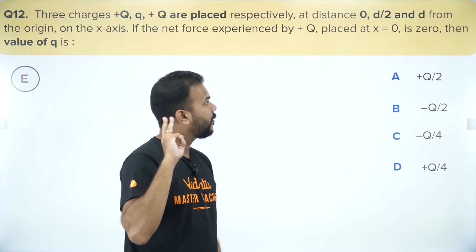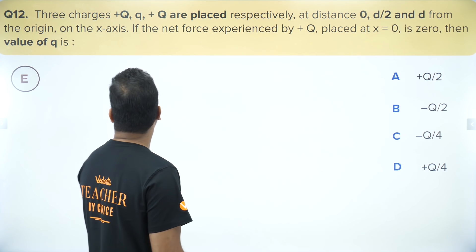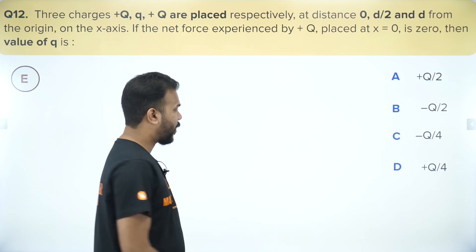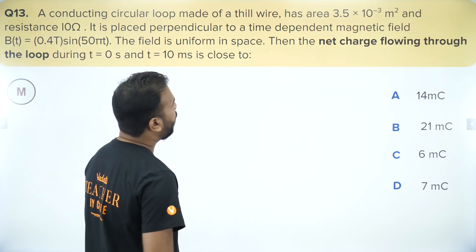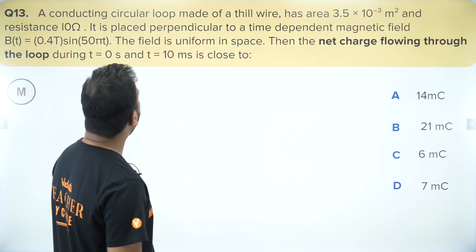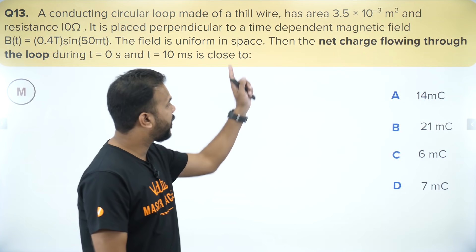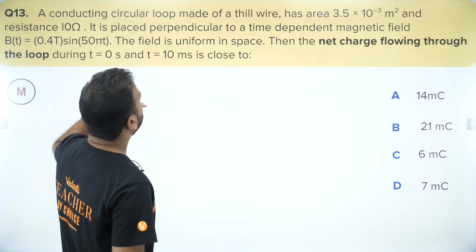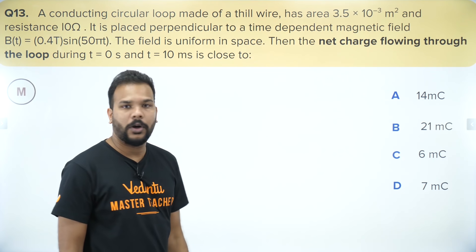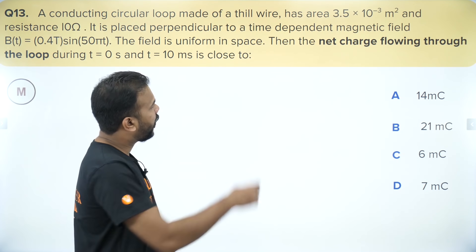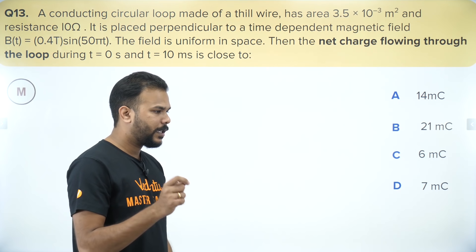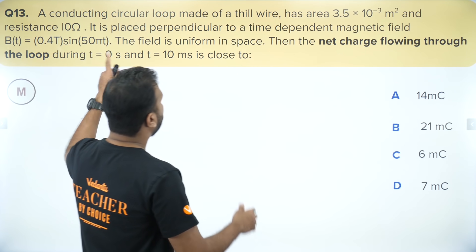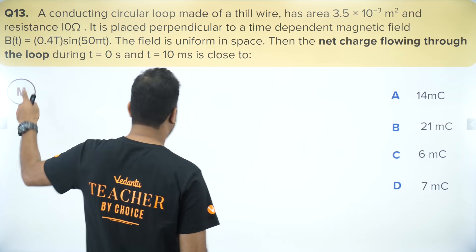Three charges, one in equilibrium — find Q to keep the entire system in equilibrium. A jackpot question that we have done many times. Marking as easy. Next: a conducting loop with a charge — find the net charge flowing through if the magnetic field is a given value. We apply Faraday's law: EMF = rate of change of flux; B and area are given. Marking as mediocre.